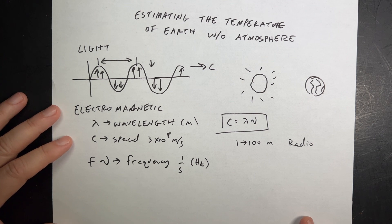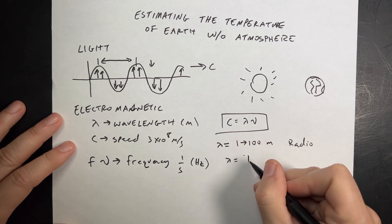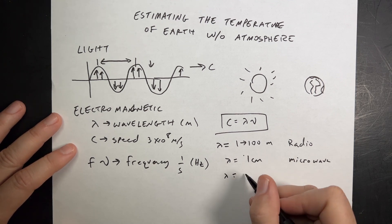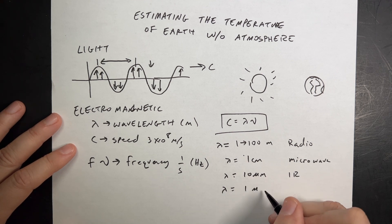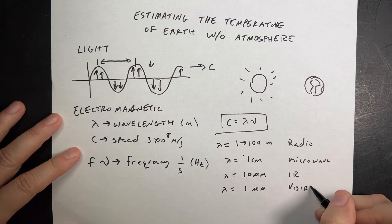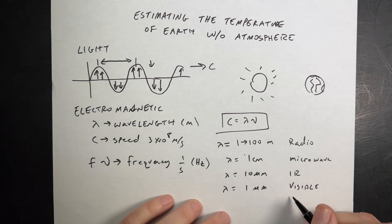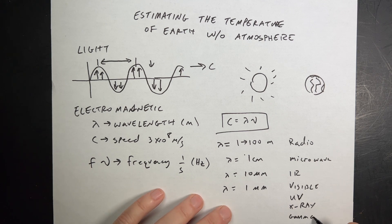If the wavelength lambda is about a centimeter, that's a microwave. Around 10 micrometers — that's 10 to the negative 6 meters — is infrared. Around one micrometer is visible light, which is a very tiny range of wavelengths our eyes can detect. Shorter wavelengths go to ultraviolet — UV — then X-rays, then gamma rays. So we have this electromagnetic spectrum: they're all electromagnetic waves with different wavelengths, all traveling at the same speed.